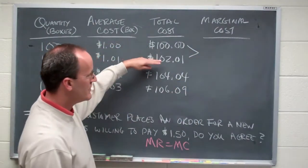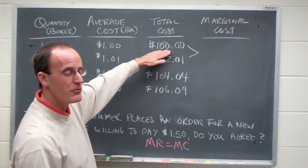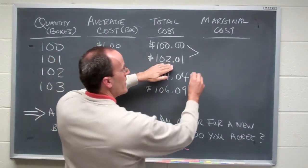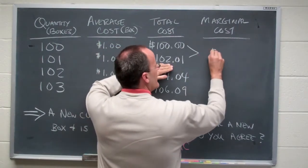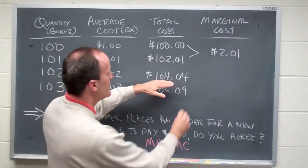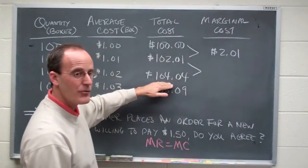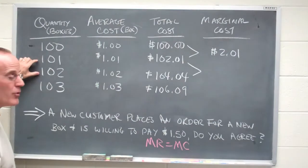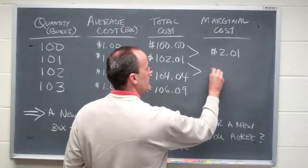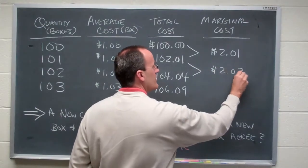So in this case, we started at a hundred with a hundred boxes. Now we're at 102 with a penny left over and 101 boxes. That difference is two dollars and one cent. We can find the same increase right here or the extra cost of making one more set of boxes.